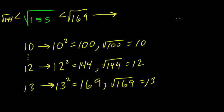We just said that the square root of 169 is 13, so the square root of 155 is less than 13. It's also greater than 12, because 12 is the square root of 144.